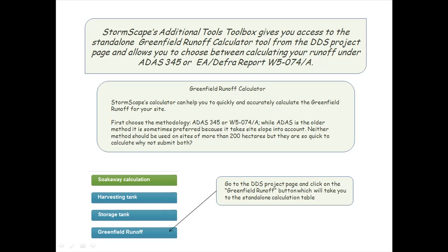First, choose the methodology: ADAS 345 or W5074A. While ADAS is the older method, it is sometimes preferred because it takes site slope into account. Neither method should be used on sites of more than 200 hectares, but they are so quick to calculate — why not submit both?